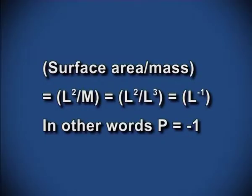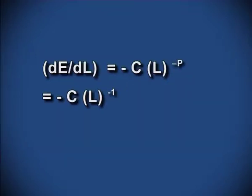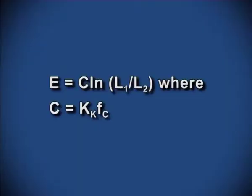Kick's law, instead of surface area alone, proposes surface area per unit mass. Surface area per unit mass is L²/m, and since m = volume × density = L³, this gives L^(−1), so p equals −1. In differential form: dE/dL = −C·L^(−1). On integration, it gives E = C·ln(L2/L1), where C is a constant. Kick's law holds good for coarse crushing (large to medium size). A drawback is that energy requirement is considered independent of feed and product sizes as long as the reduction ratio is constant.